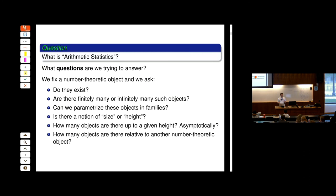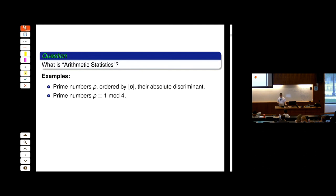We'll see examples of those. For instance, we'll start with prime numbers — you can order them by their absolute value. These notes and slides I will post after the lecture, because I'm going to fix things along the way, and then put them up on the website next to my name on the page for the summer school.